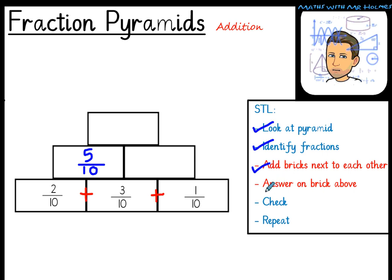And the answer goes on the brick above the add sign. That's four tenths. There we go. And what do we do? Yes, we check our answer. Three tenths and one tenth gives us four tenths. Or the inverse. Four tenths take away one tenth would leave us with three tenths. Fantastic.